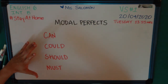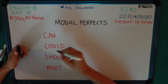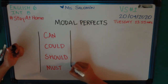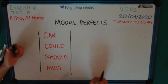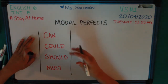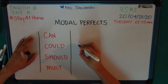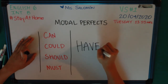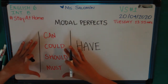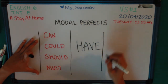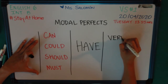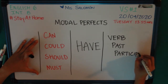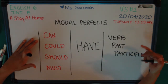When we talk about modal verbs in this context, we are talking about the past tense of these verbs. In order for us to speak about the past tense of these verbs, we have to add something more to it, which is the verb 'have.' Every time we use a modal verb plus 'have' plus a verb in the past participle form, we are using this structure.